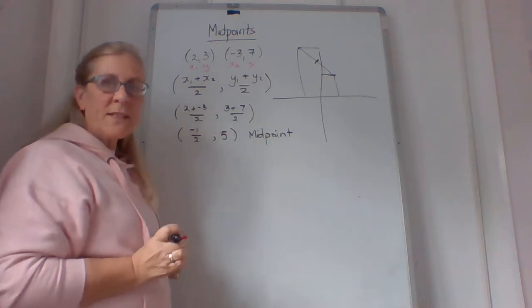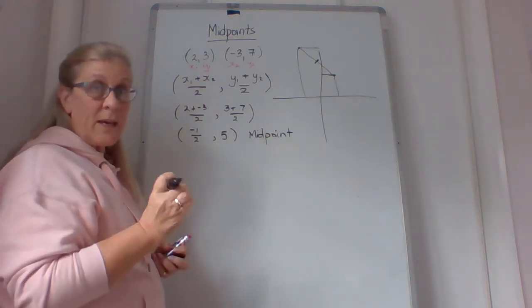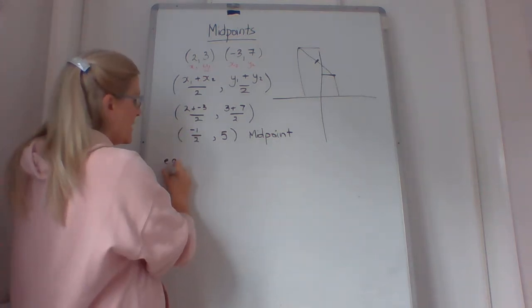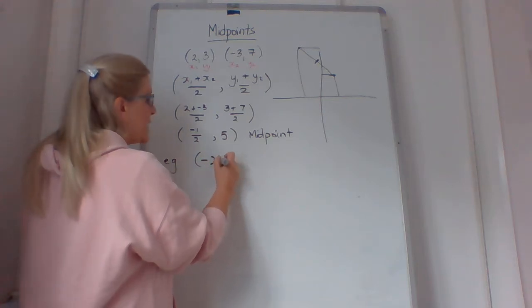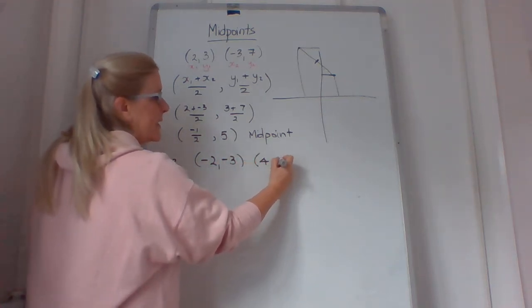Watch your positives and your negatives, but you should be okay with finding it. Just remember, you have to actually use the formula. Let's have another look at one. So if I've got (-2, -3), and (4, -1).